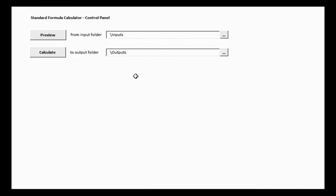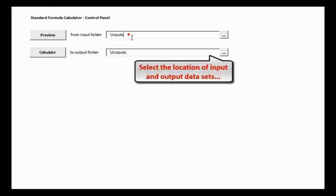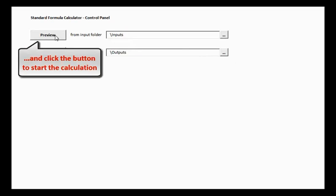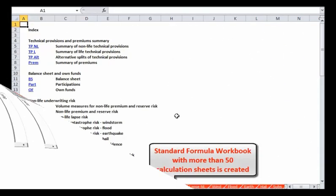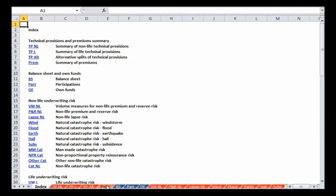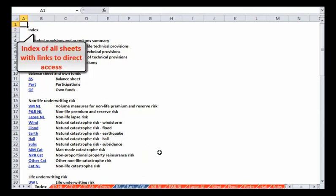The calculator is simply operated by the control panel, where the location of input and output dataset is specified, and with just one click you generate a standard formula workbook with more than 50 calculation sheets. A list of all sheets can be seen on the first index sheet.